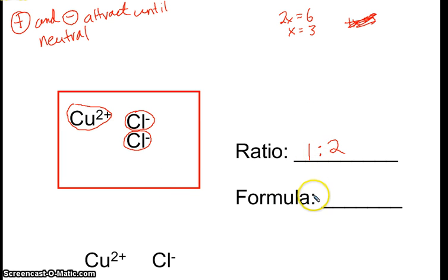Okay, the formula is a bit like a ratio, it's a recipe. So we've got Cu and we put one there, but we don't write ones. Cl2. So the formula tells you how to make it: you have one copper and two chlorides.